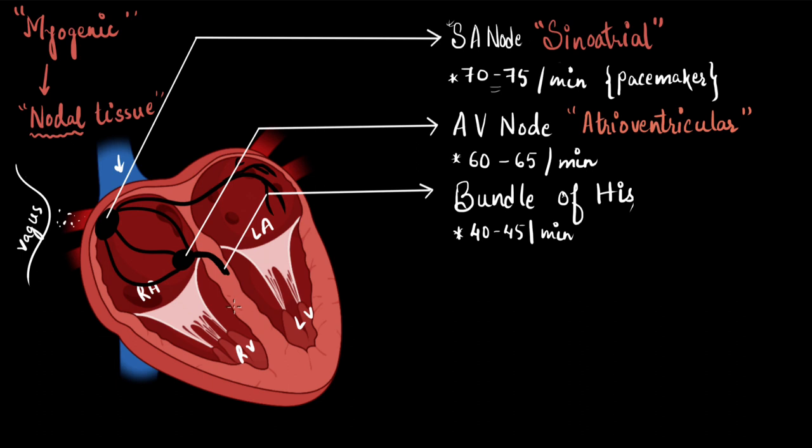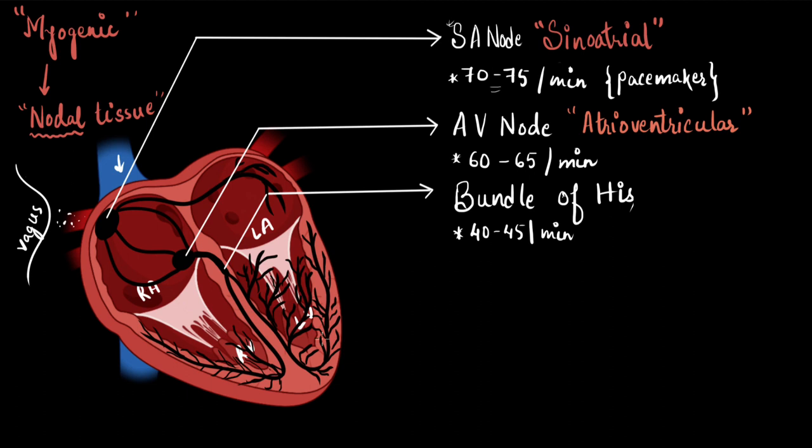Now, the bundle of His, in order to reach both the ventricles properly, it bifurcates into two separate bundles. And each bundle forms branches. Branches and it seems as if it is holding the two ventricles. And this part is called the Purkinje fiber.